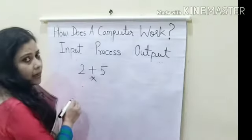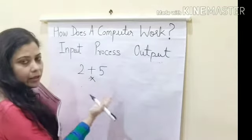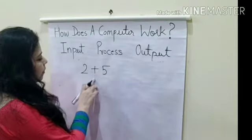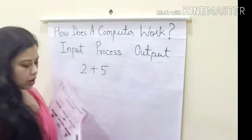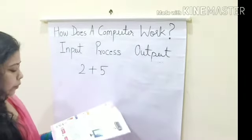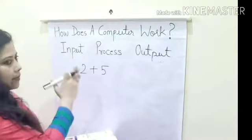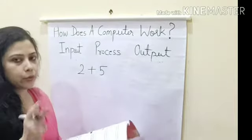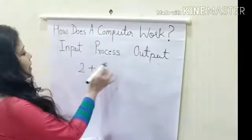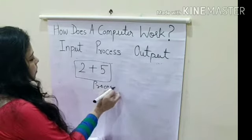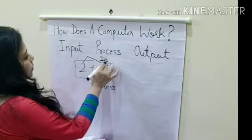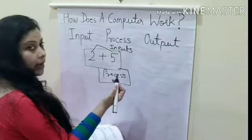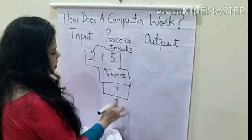If you put a multiplication sign instead, it will give you a different result. It depends on what instruction you give to the computer. Here, we are giving the instruction to add these two numbers. When you enter the two numbers and put a plus sign, the work of the CPU starts. The CPU works on the data according to the instruction and adds the two numbers — that is called process. The result you get, which is seven, is the final result and that is the output.